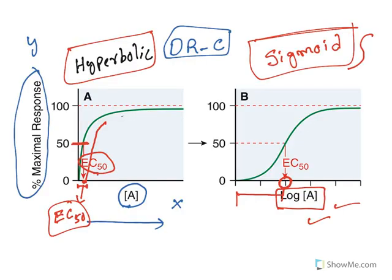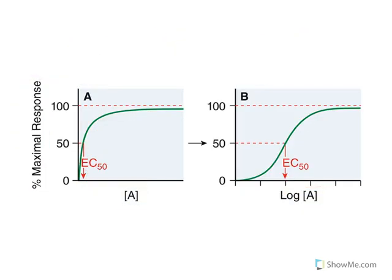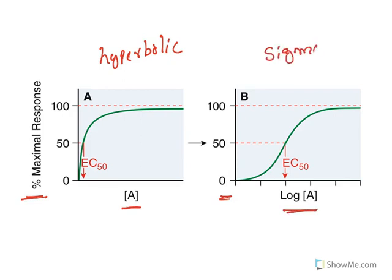This is what is tested in examinations: when the dose-response curve is plotted between response and concentration, the curve is hyperbolic. But when the dose-response curve is plotted between response and log concentration, the curve is sigmoid. Understand this — it is tested in competitive examinations.